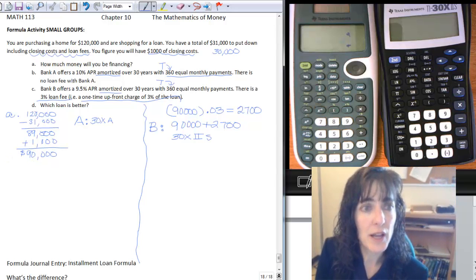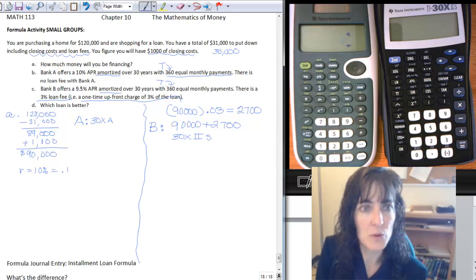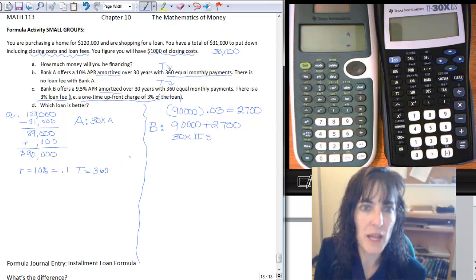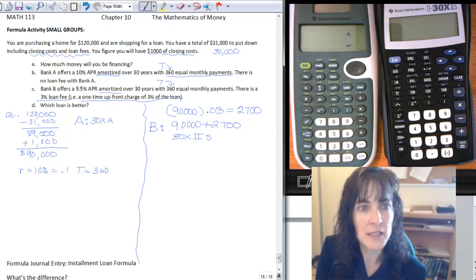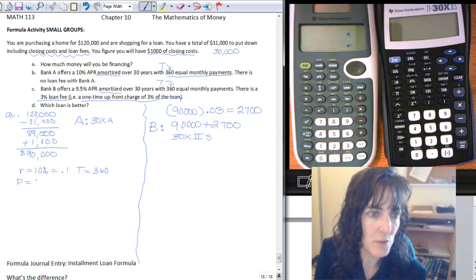So for Bank A, we have a rate of 10%, so that means 0.1 as a decimal. We have a capital T, we don't even have to calculate it, we already know it's going to be 360 payments. And our starting loan amount is going to be, for this one, $90,000.